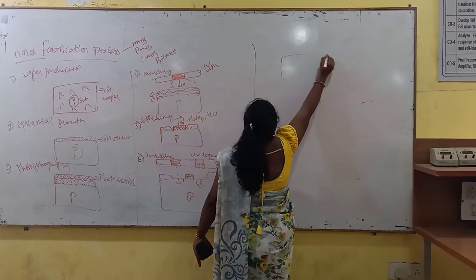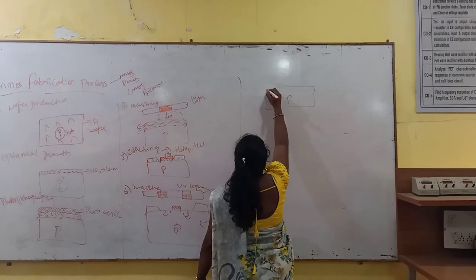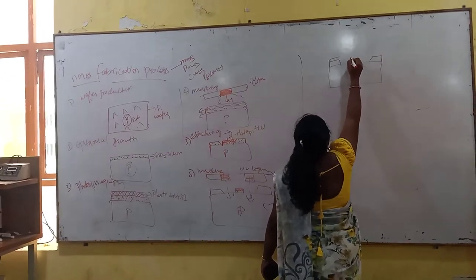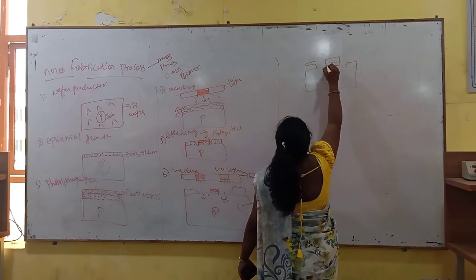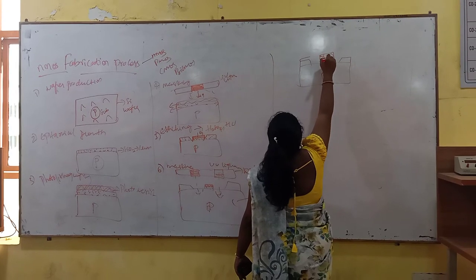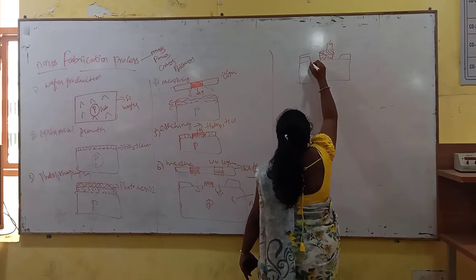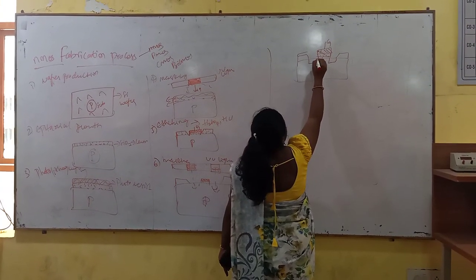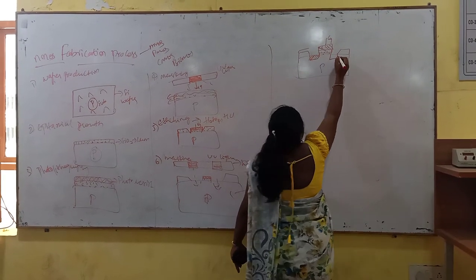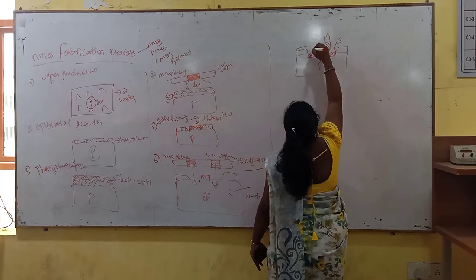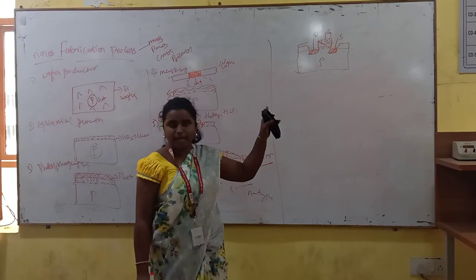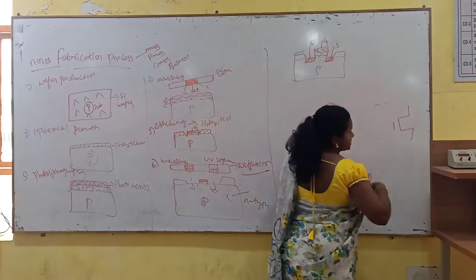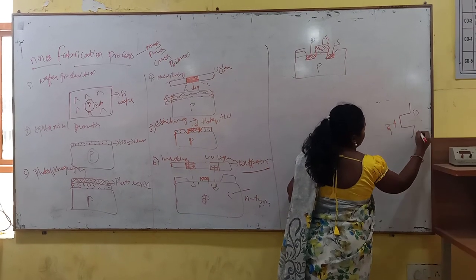Now our transistor will be looking like this. This is the P-substrate. The polysilicon forms the gate terminal. The N-type impurity regions give us the drain and the source terminals. So this is the source terminal and this is the drain terminal — they have been formed. All three terminals — gate, drain, and source — of the NMOS transistor have now been formed.